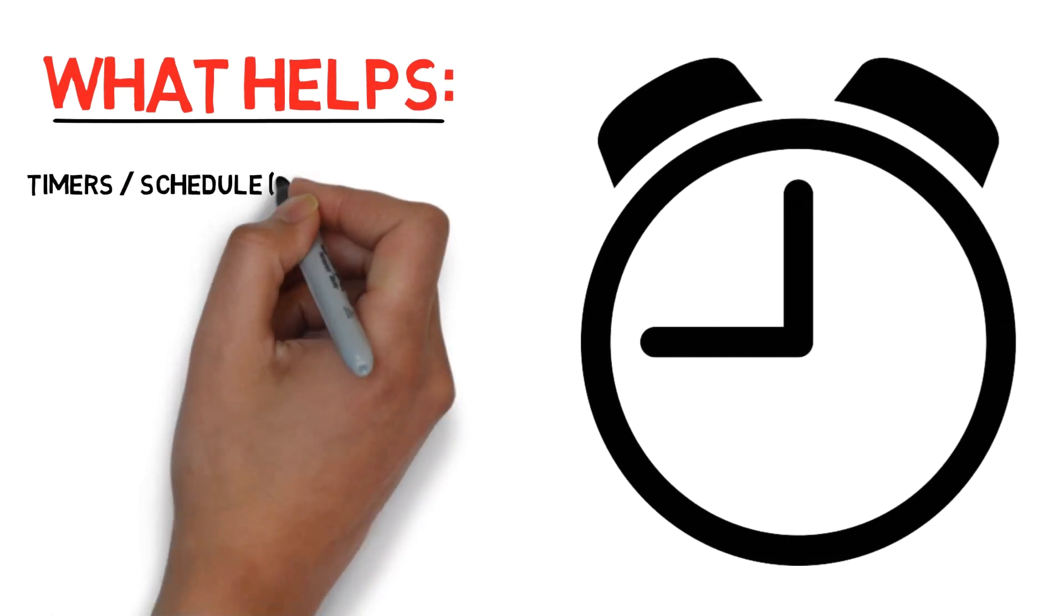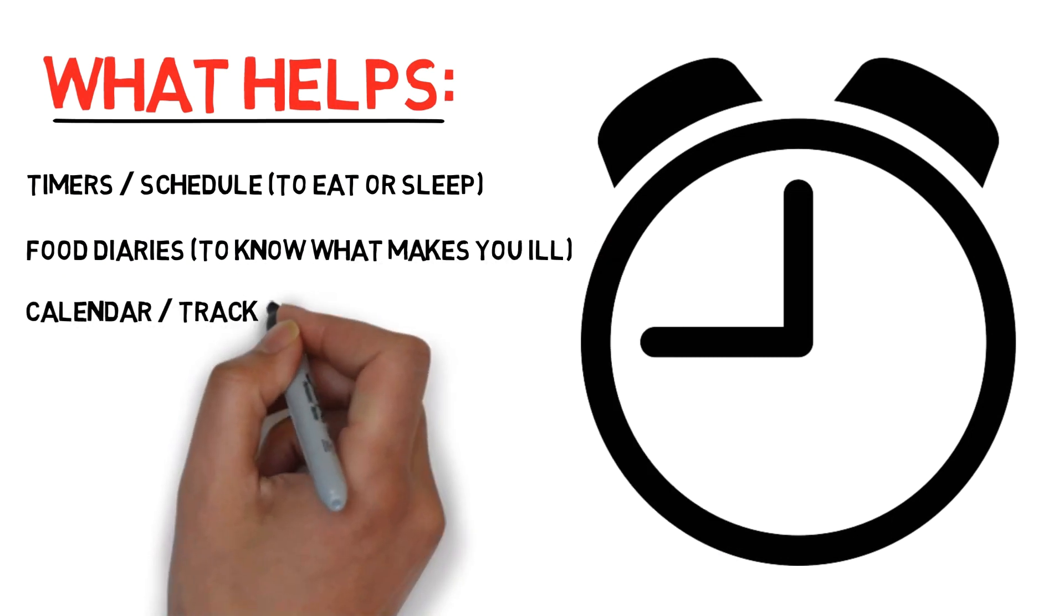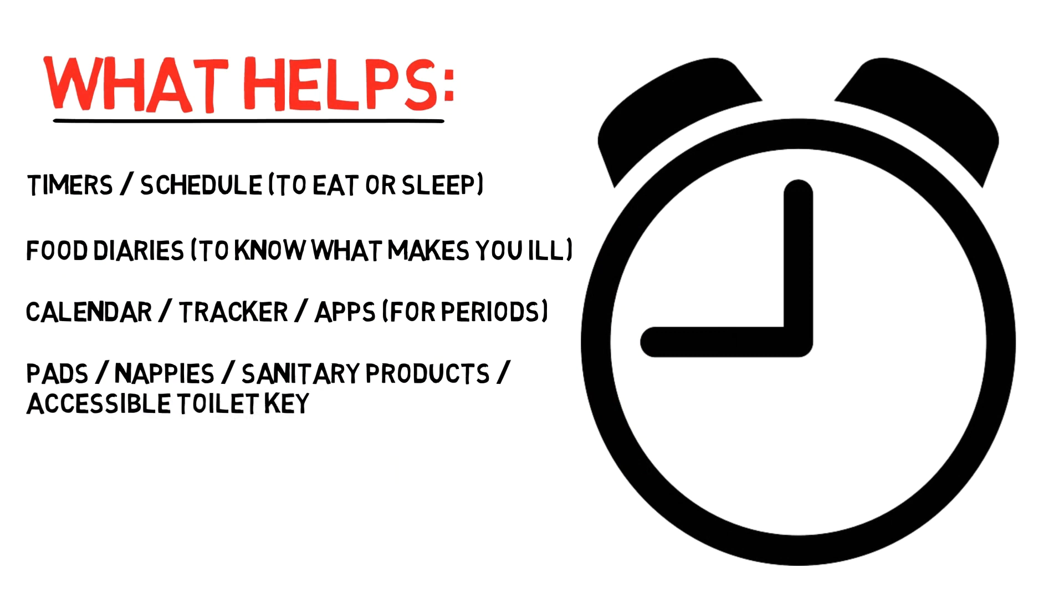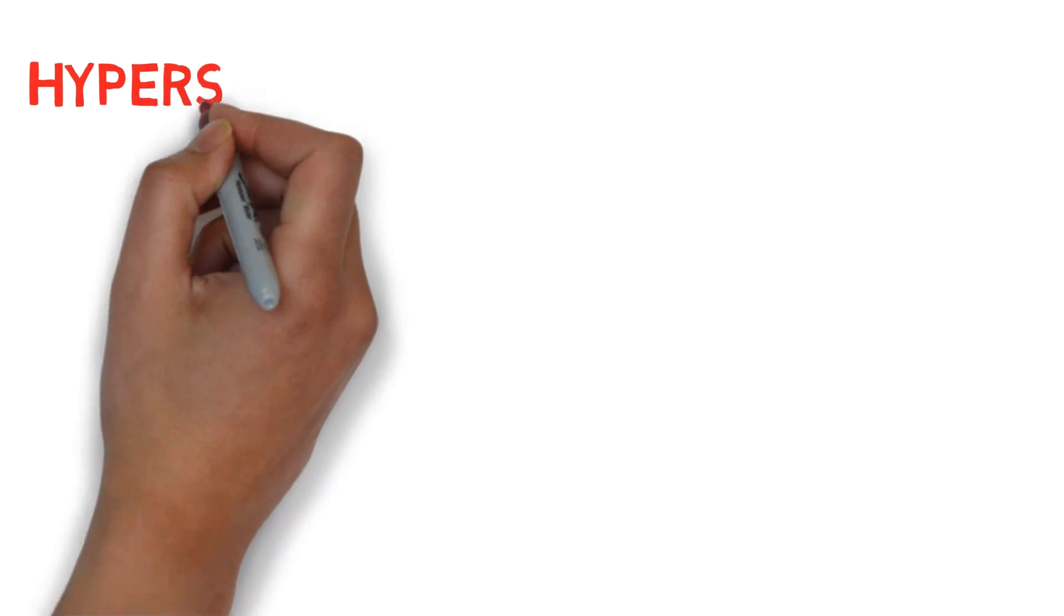What helps? Timers, schedules to remind you when to eat, food diaries to know what might make you ill, calendars, trackers and apps for things like periods, sanitary products for toileting needs, learning how to recognize the signs of illness, and of course always ask the person themselves.